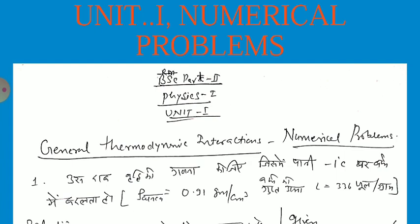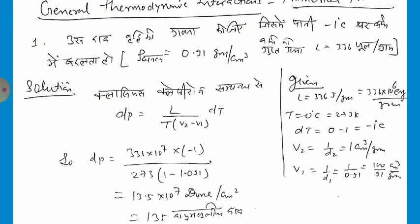First question: if water is converted into ice at minus 1 degree Celsius, then we have to calculate the change in pressure. We have been given the density of the ice and the latent heat of the ice. First of all, we have to calculate the Clausius-Clapeyron equation.